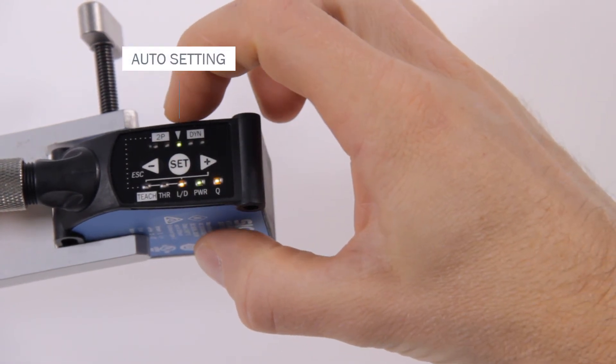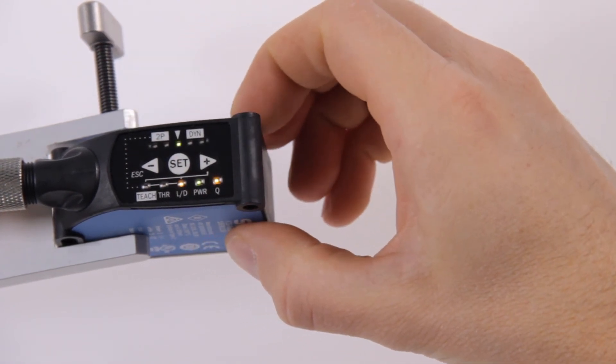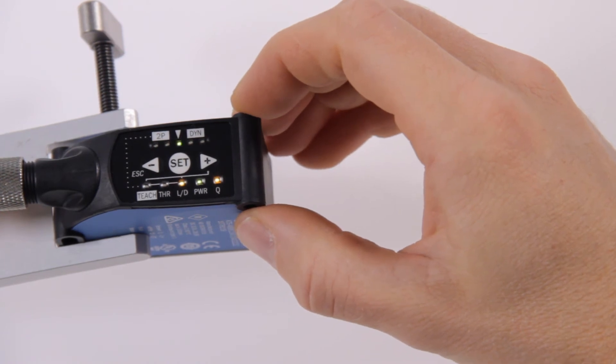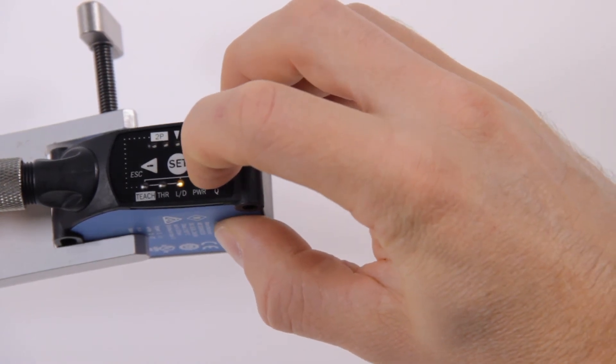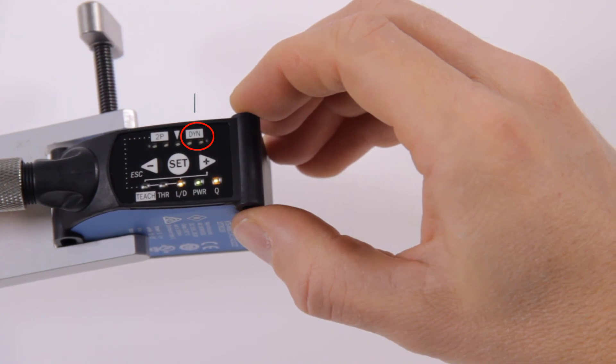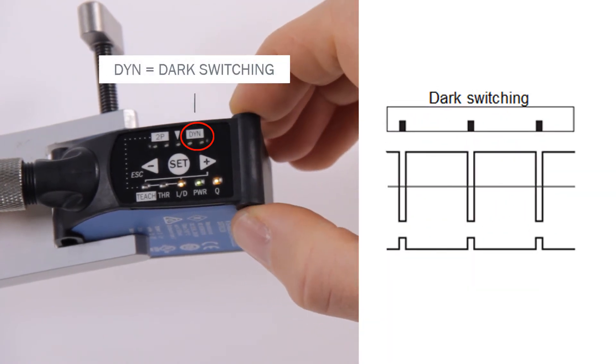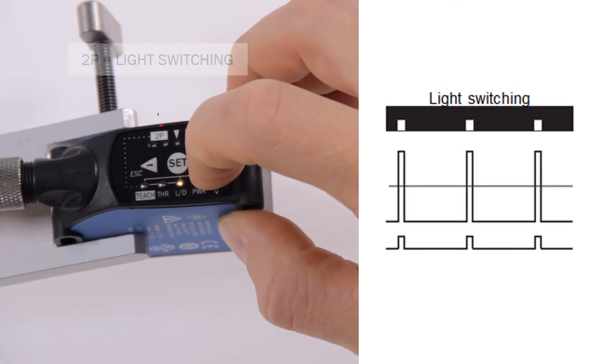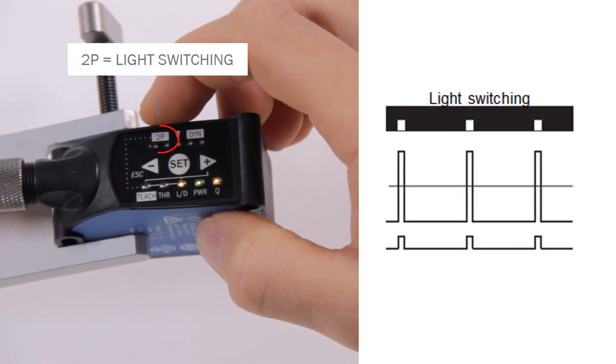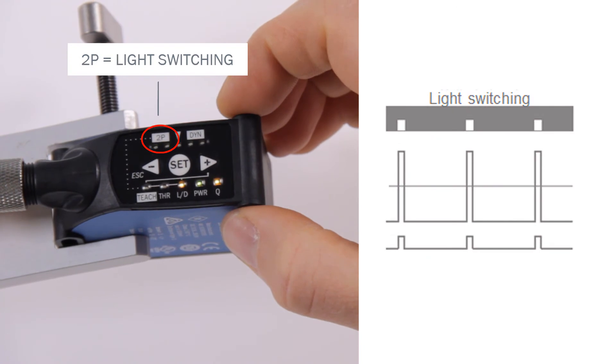This is the auto setting of the sensor. Use the plus and minus buttons to switch between light and dark switching. The two green LEDs under DYN indicate dark switching and the two green LEDs under 2P indicate light switching. Select one of the settings and confirm with SET.